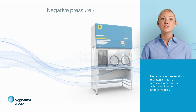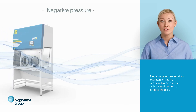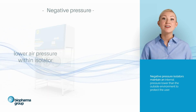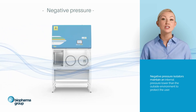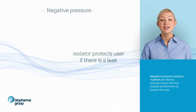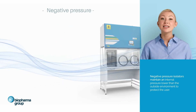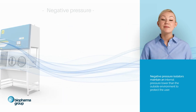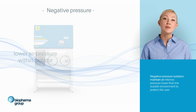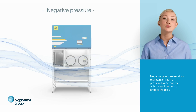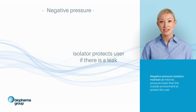For cytotoxic handling, negative pressure operation is generally favored because in the event of a leak developing, cytotoxic drugs will still be contained within the isolator. These are especially suitable for applications such as cytotoxic and CMR preparations or small production of cytotoxic or toxic drugs.